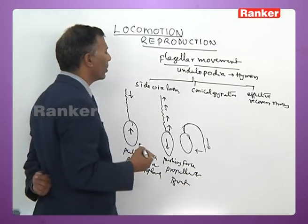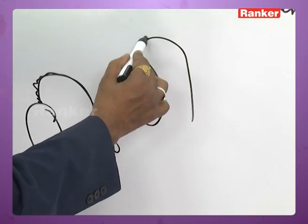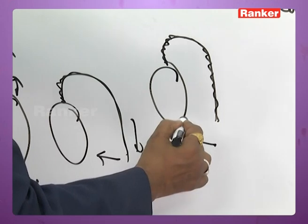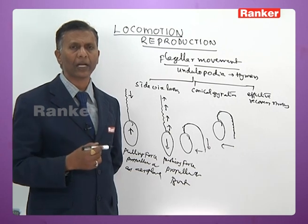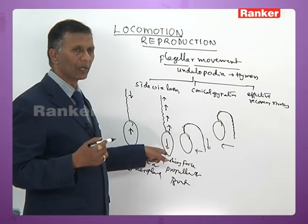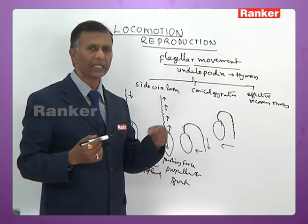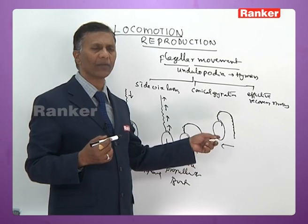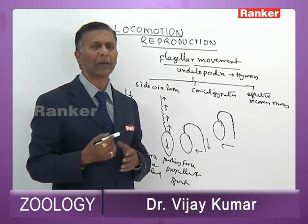In conical gyration, the flagellum is bent on one side and undergoes vigorous undulations in a spiral manner from the point of origin towards the tip. The animal also moves in a spiral manner along the path in the opposite direction. This is comparable to a screw getting inserted into a wooden plank — the flagellum undergoes a series of serpentine movements and the animal moves spirally in the opposite direction.